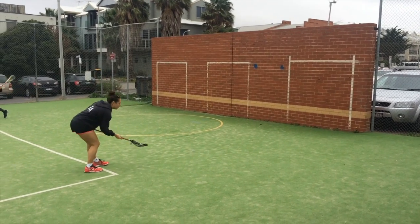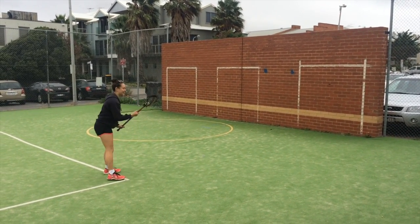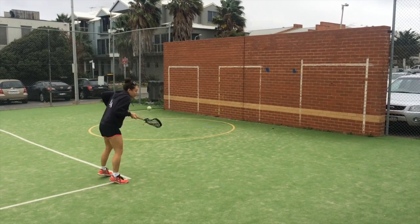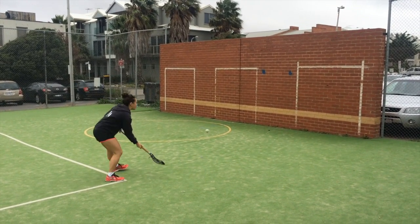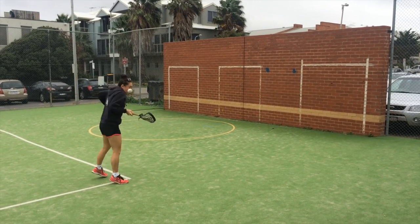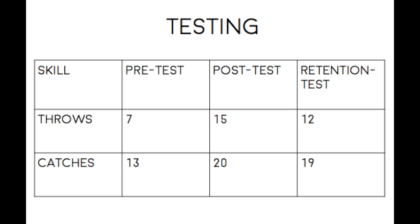Our retention test was completed two weeks after the post-test. This test included counting how many throws reached the target, and the catching test was how many balls the participant caught in a row. The pre-test results showed the learner to be able to perform seven consecutive throws and thirteen consecutive catches. After the completion of the program, a post-test showed improvement: the learner was able to perform fifteen consecutive throws and twenty consecutive catches. A retention test performed two weeks after the program gave results of twelve throws and nineteen consecutive catches.